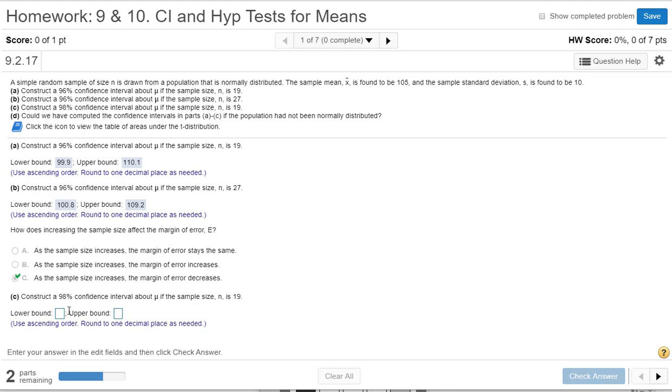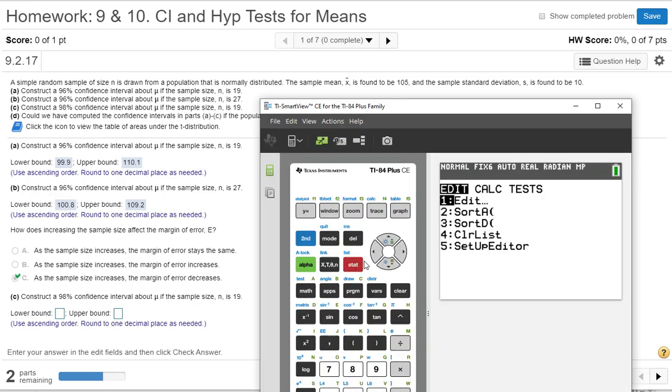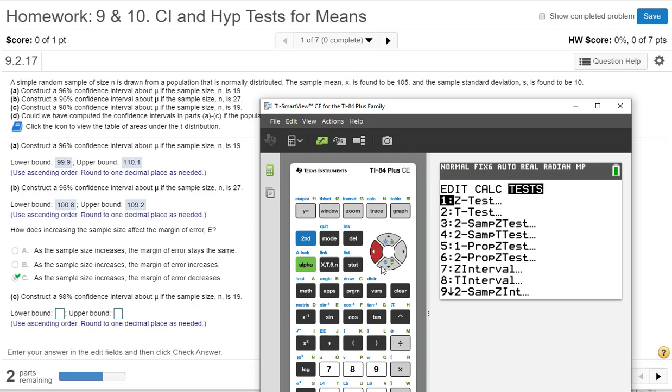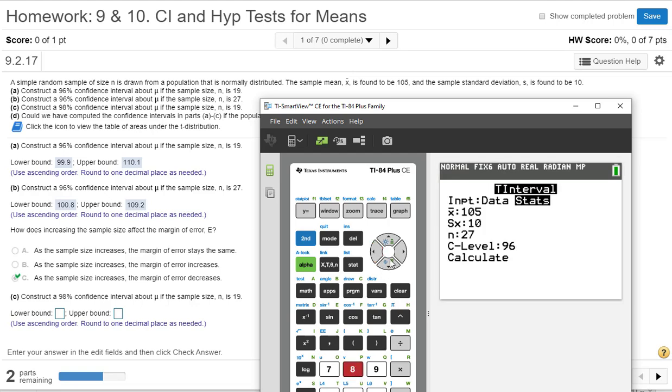So now for part C, the 98% confidence interval. Let's go back in here. Stat, test, number eight, T interval still. Okay, so what changed here? We have sample size back to the 19, what it was in part A. And this time our confidence level is going to change to 98%.